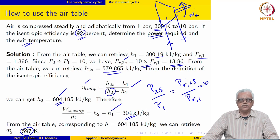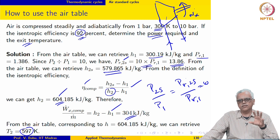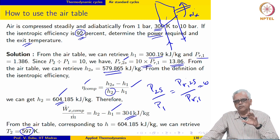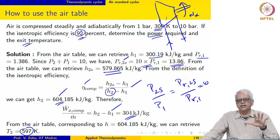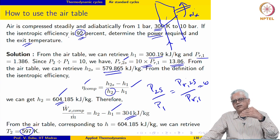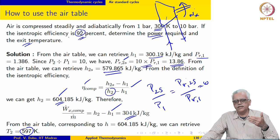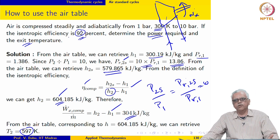In the next lecture we will work out an example involving the basic Brayton cycle, allowing for property variation — we will not assume Cp to be constant. We will do the calculation with the air table for the basic cycle, then analyze the performance parameters of the cycle as we did before in the case of the Rankine cycle, and keep going from there.